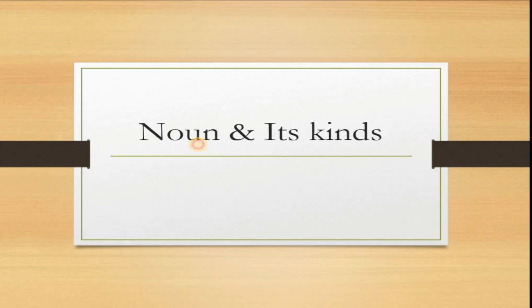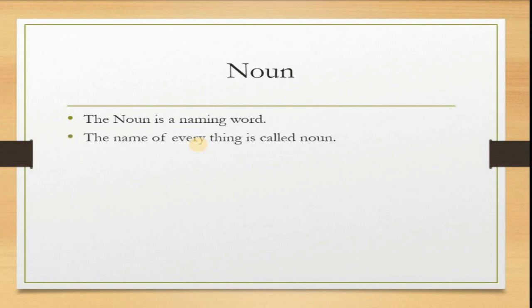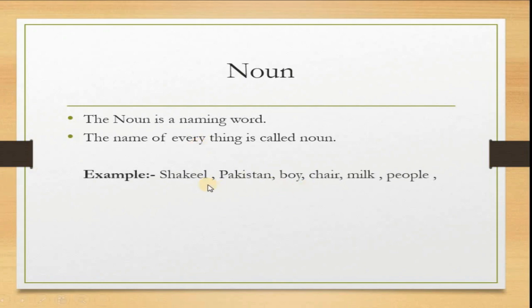First of all, what is noun? The name of anything is called noun. For example: Shaqeel, Pakistan, boy, chair, milk, people, childhood.